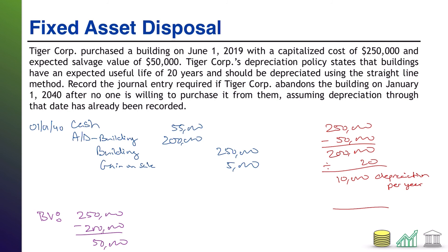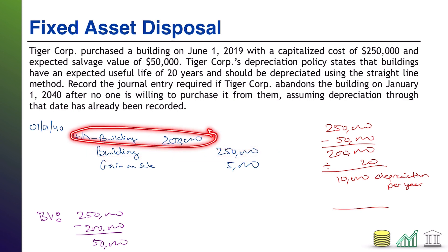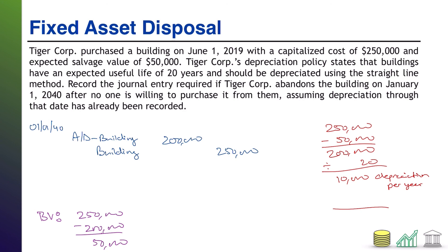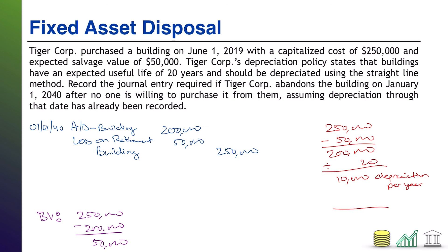Welcome back. The biggest change is it's the same date as the third question, but we aren't getting any cash. No cash. We are still getting rid of a $250,000 building, and that building still has $200,000 of accumulated depreciation, meaning it still has a $50,000 book value. If we're simply throwing it away, we're going to have a loss of $50,000 — we're literally throwing away a $50,000 asset. Loss on retirement — not sale because we didn't sell it — $50,000.